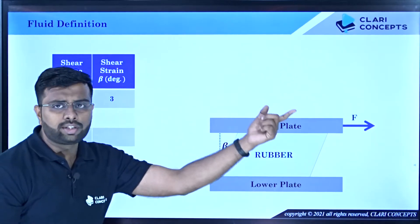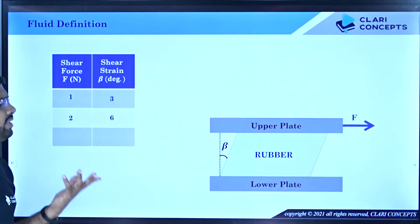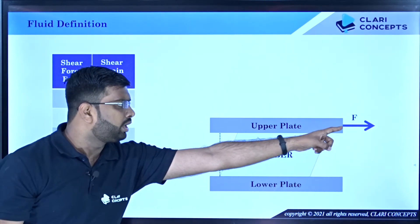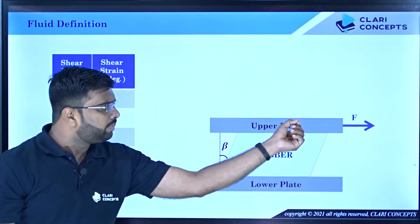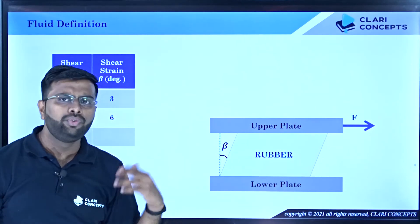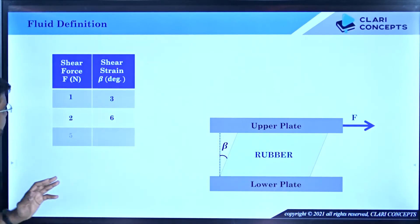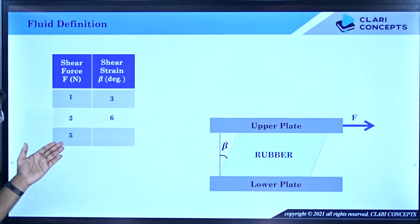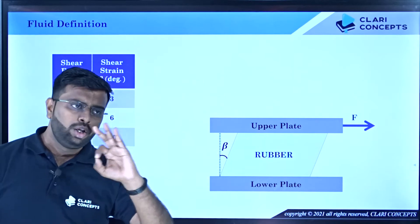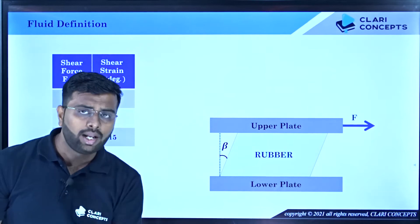If you increase the force to 2 Newtons, the deformation increases to, say, 6 degrees — but after that it stops at 6 degrees. If you increase to 5 Newtons, the degree will increase further. This is the behavior of a solid body: under shear force, it deforms to a particular angle and stops. That is what we call deformation of a solid.